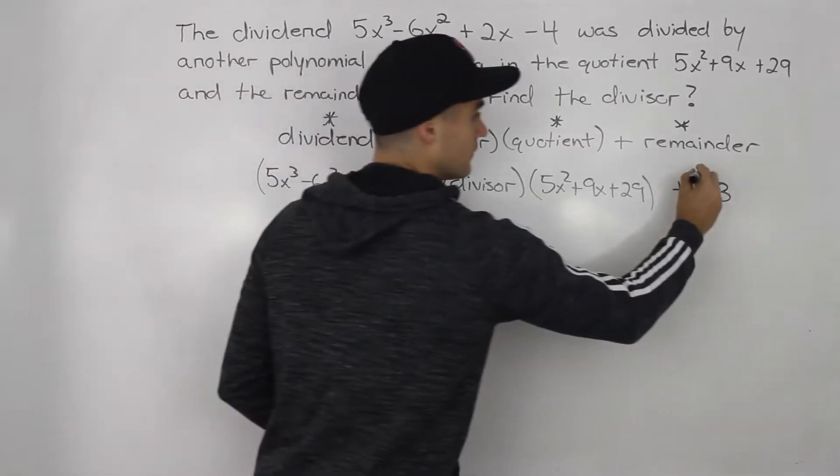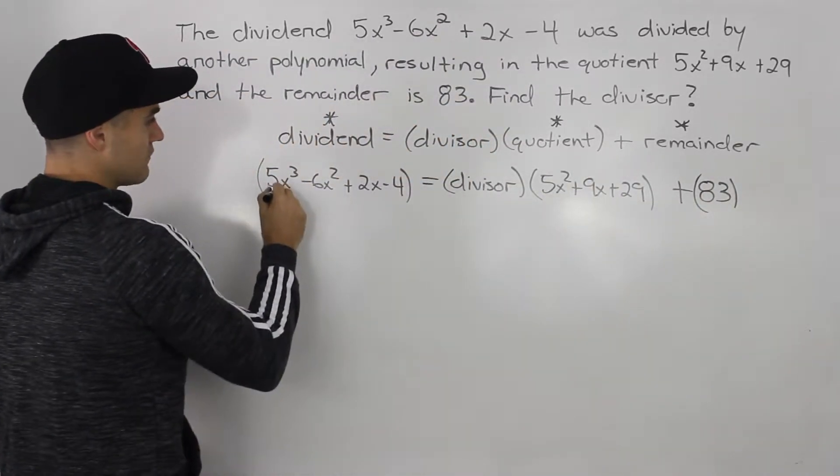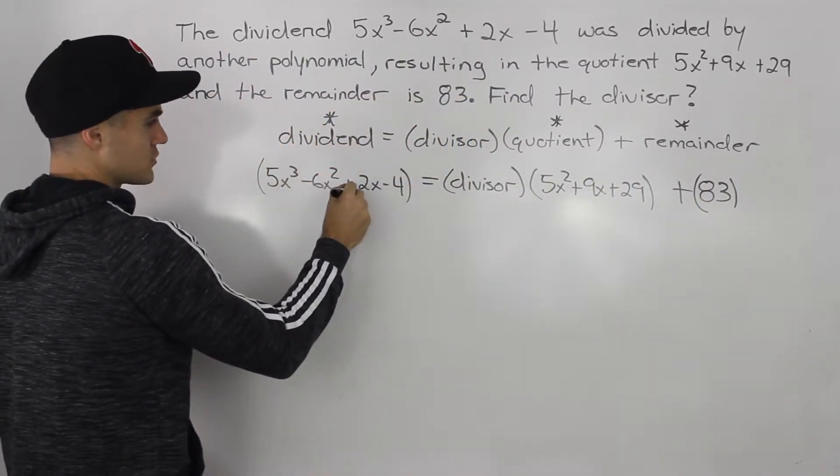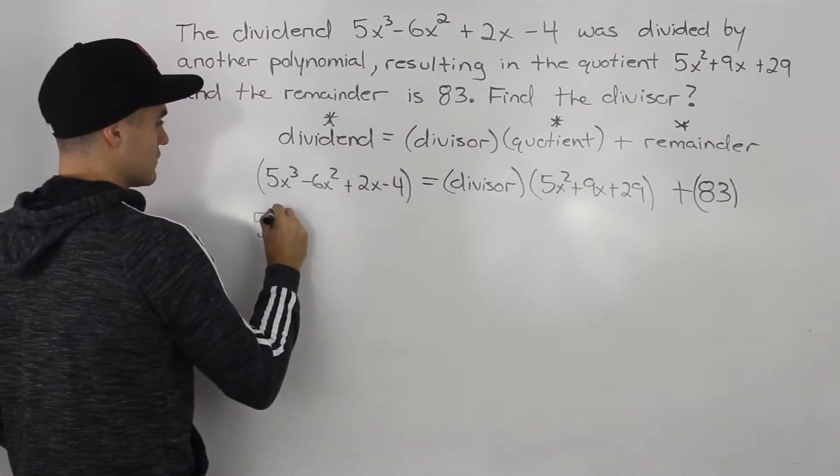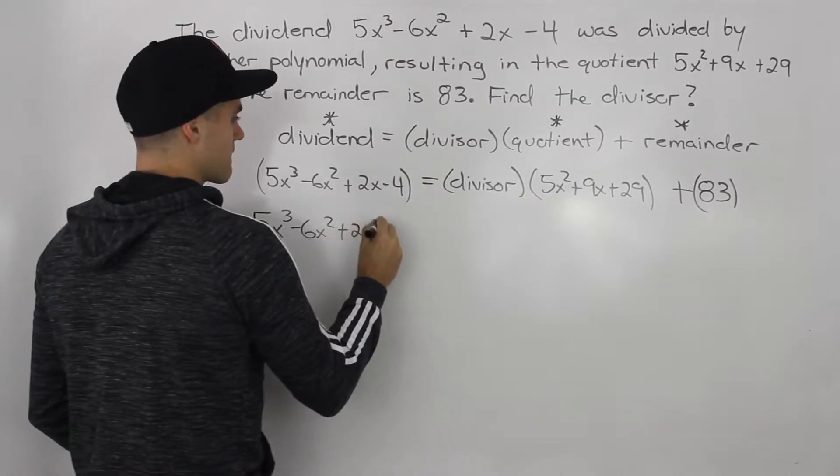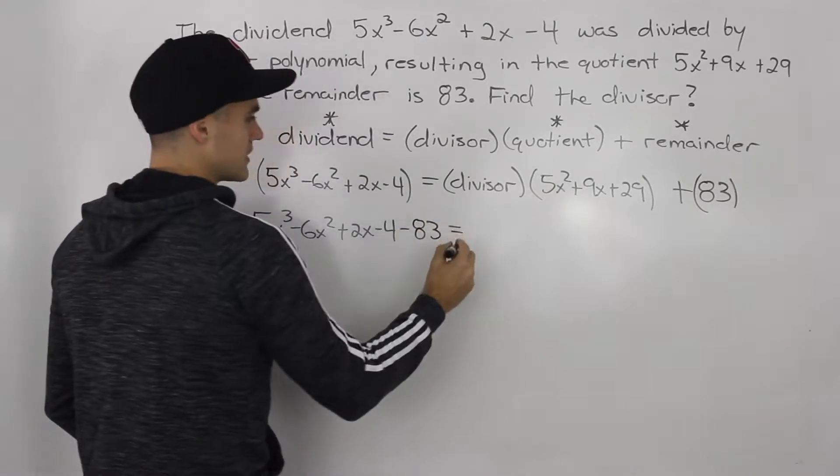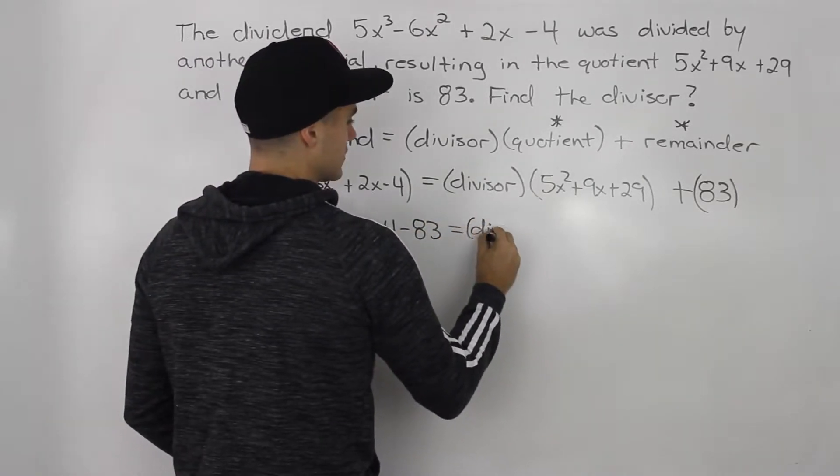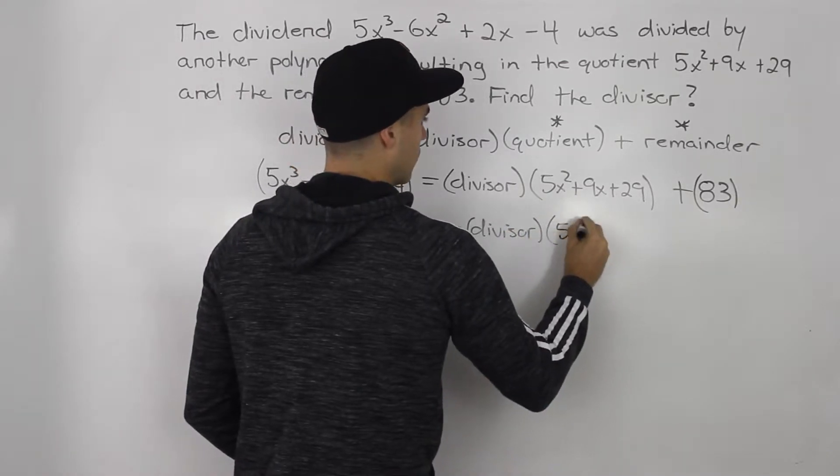Well the first thing you do is you bring this expression over. So you'd have 5x cubed minus 6x squared plus 2x minus 4 minus 83 because it's positive on the right side. So when we bring it over to the left side, it becomes negative. And then that's going to equal the divisor times that whole quotient still.